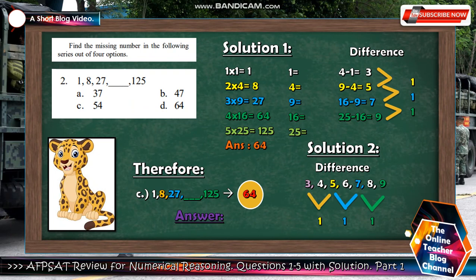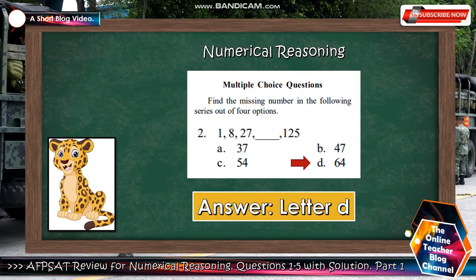Let's do have two solutions here to solve. Number 1 is you need to multiply 1 by 1 times 1 equals 1, 2 times 4 equals 8, 3 times 9 is 27, 4 times 16 is 64, 5 times 25 is 125. So the answer is obviously 64 since it is the missing number. Solution 2: The difference are 4 minus 1 equals 3, 9 minus 4 is 5, 16 minus 9 equals 7, 25 minus 16 is 9. So the difference increases by 1 each time. Therefore, the answer is 64 and that is letter D.